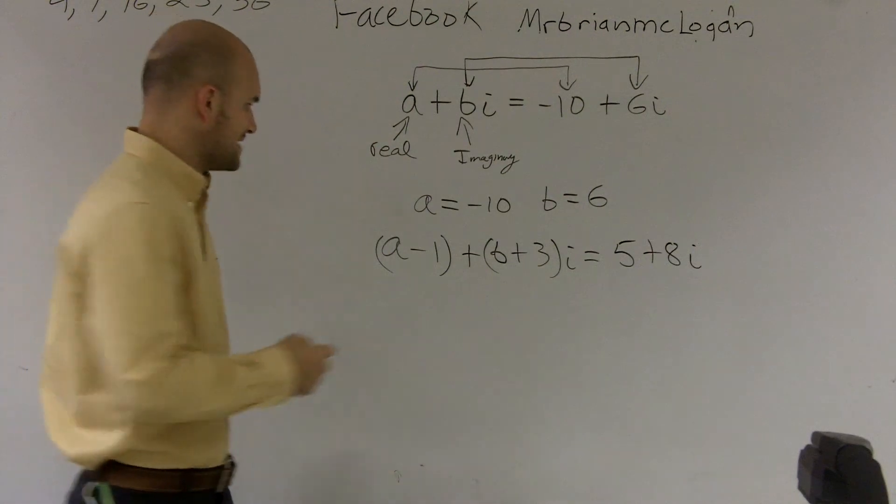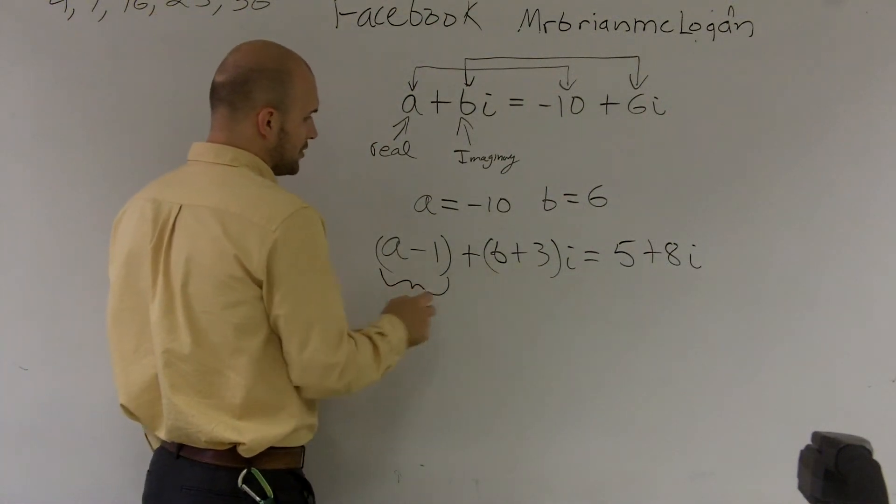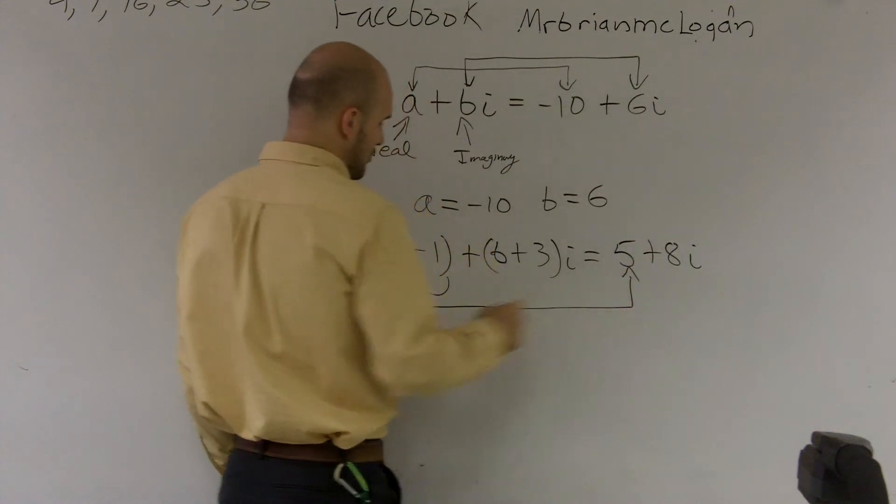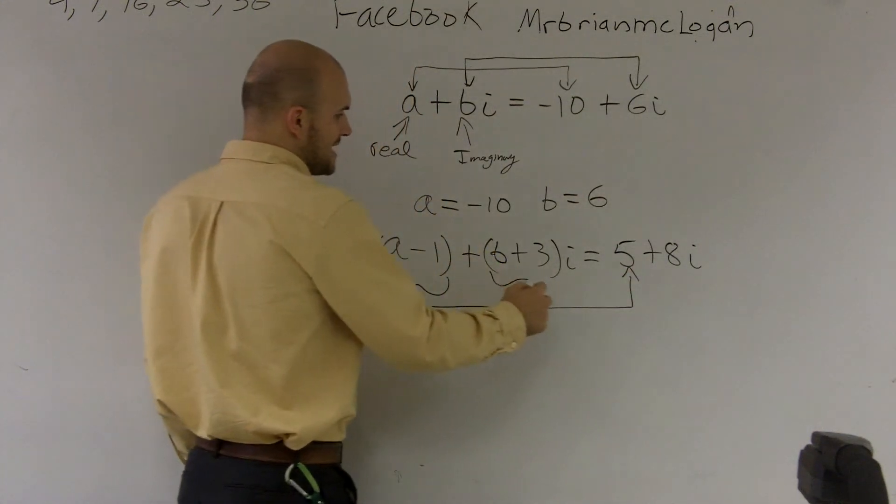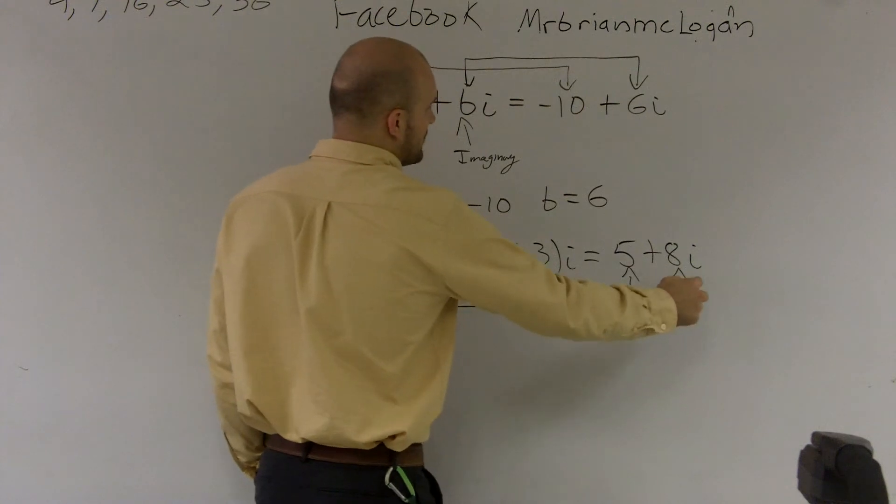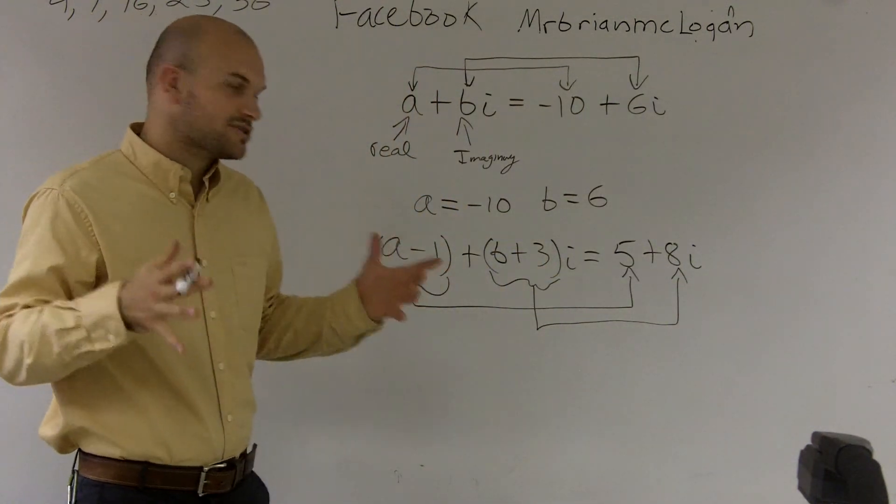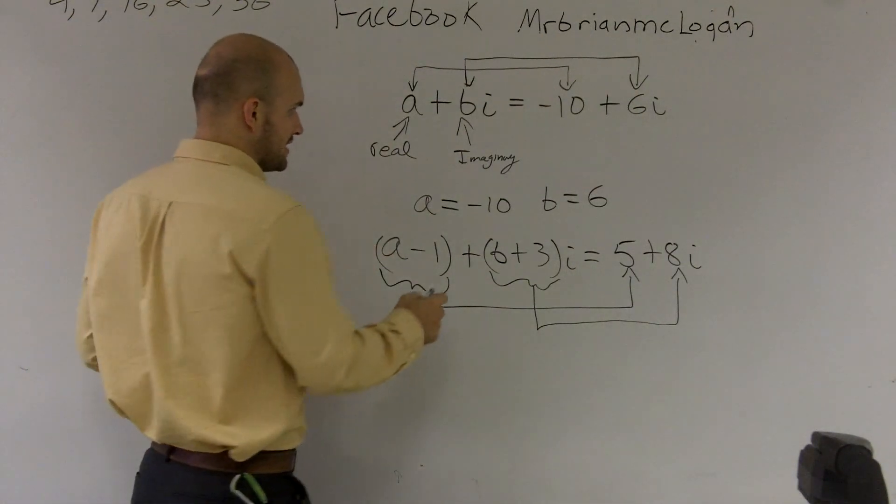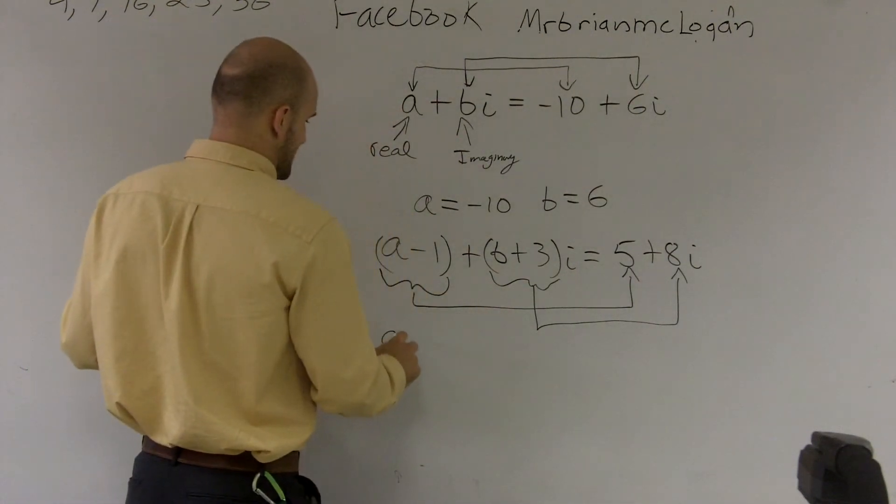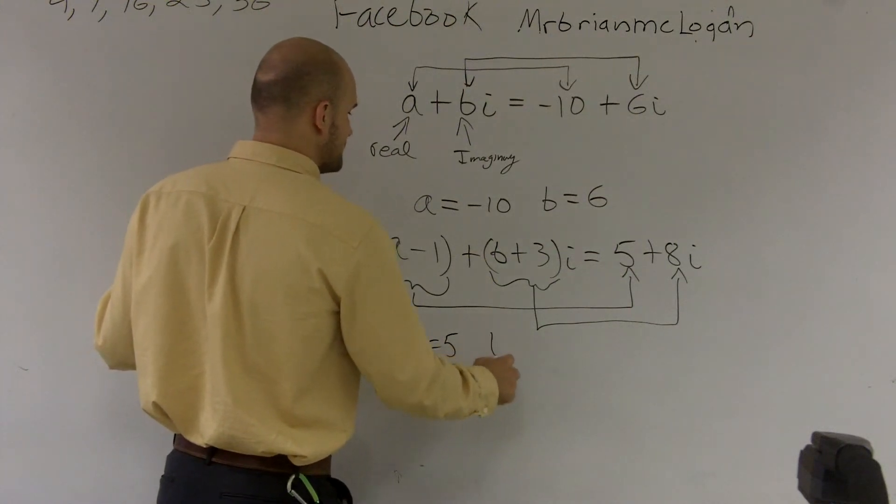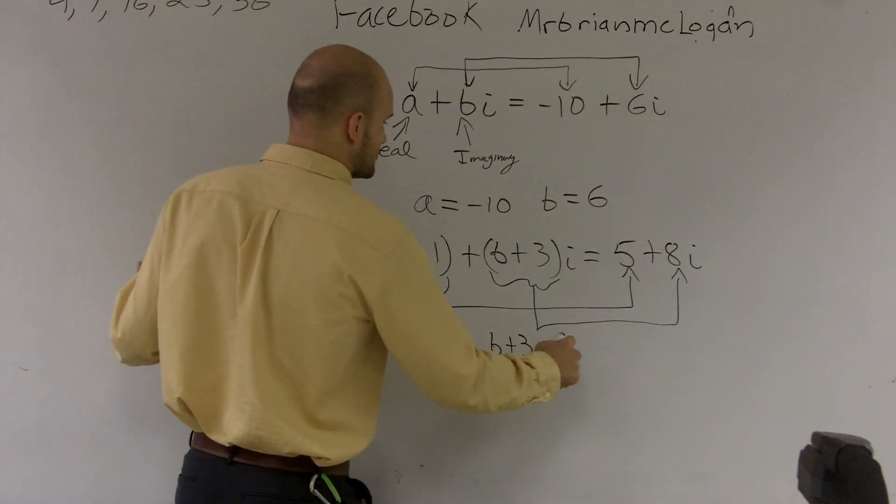By following the exact same logic, I know that my real A has to be equal to this real portion, and my imaginary has to be equal to my other imaginary for these two imaginary numbers to be equal to each other. So I can write A minus 1 is equal to 5, and B plus 3 is equal to 8.